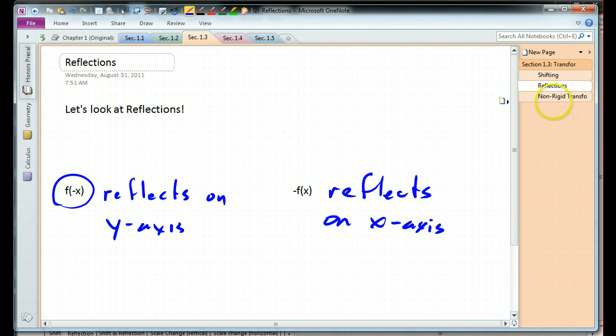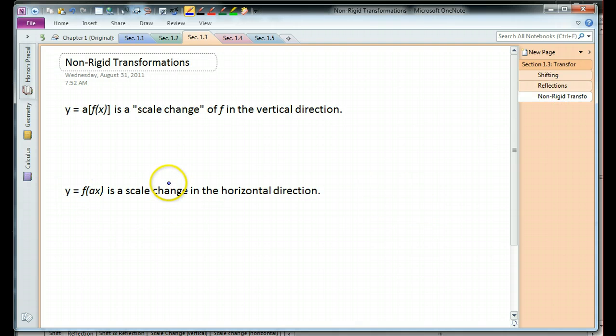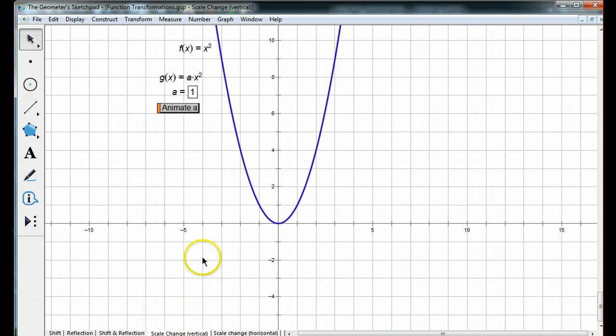Okay, now, non-rigid transformations. If I take a function f of x, and I multiply the entire function by constant a, we call that a scale change of the function in the vertical direction. So, I've got f of x equals x squared, and then let's see what happens when I multiply that x squared by a. Notice that it doesn't shift. But, the shape is changing.